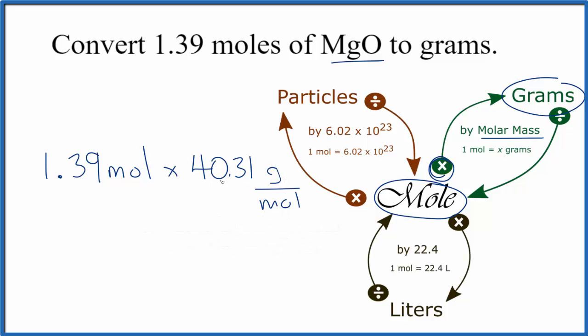Now when we multiply, we have moles on top here, moles on the bottom, they cancel out. That leaves us with grams. We get 50.03 grams of MgO.